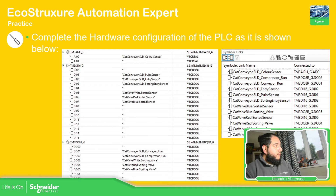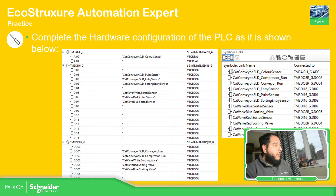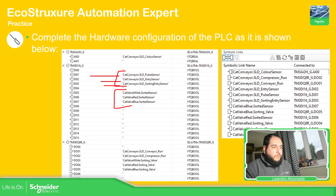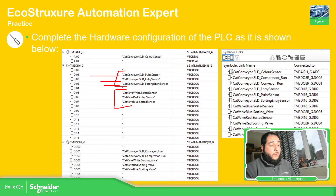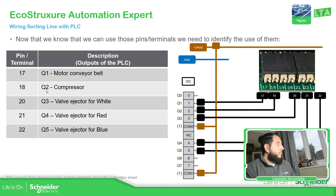Let me just double-check if I've done it right. White, red, and blue. This is easy, but it's important for you to understand the different concept before going here, because otherwise you just create and link it without understanding what's going on. You can see Pulse Entry is going to be one, two, and three, and this is linked to this part of the wiring for the inputs and outputs.